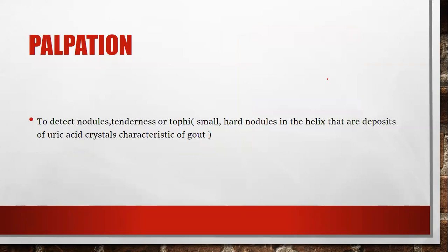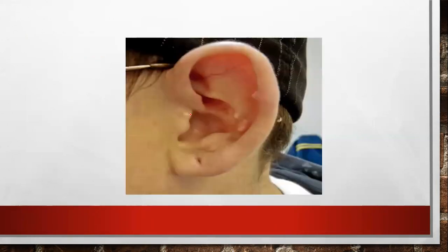The next is palpation. We can palpate the ear to detect nodules, tenderness, or tophi. On palpation, we can assess for any signs of infection or inflammation. One of the most important findings during palpation of the ear is tophi — small hard nodules in the helix that are deposits of uric acid crystals, characteristic of gout.